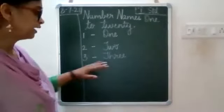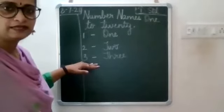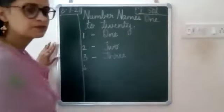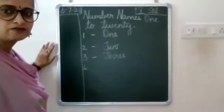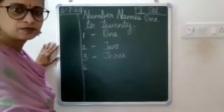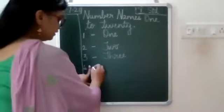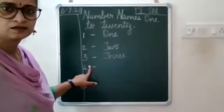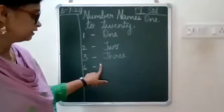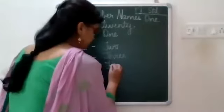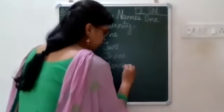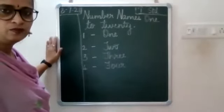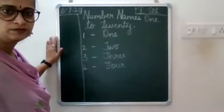After you write THREE, again leave a line, write FOUR. Leave a finger space, put a small dash, then leave a finger space, write capital F-O-U-R, four.